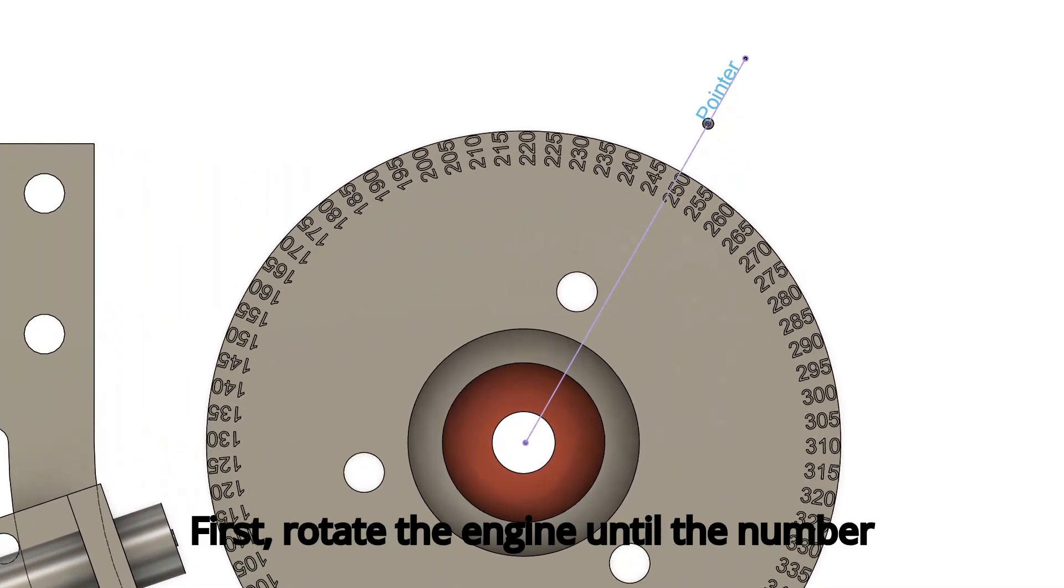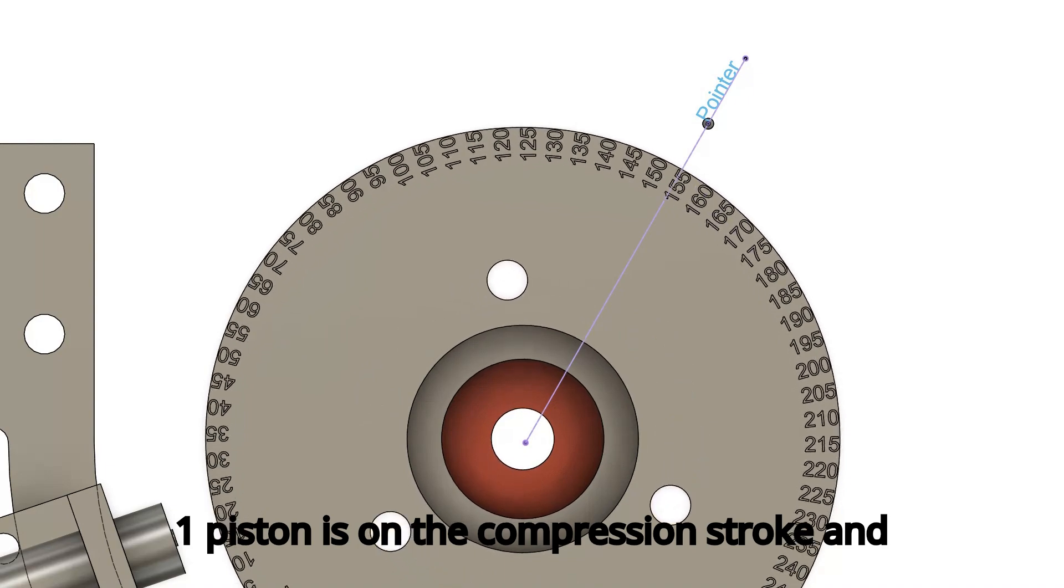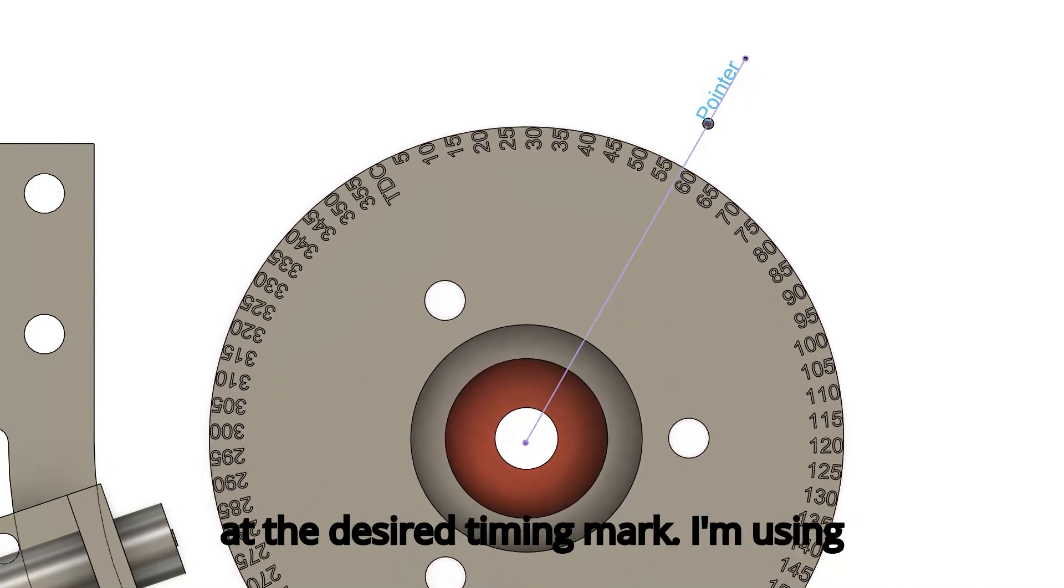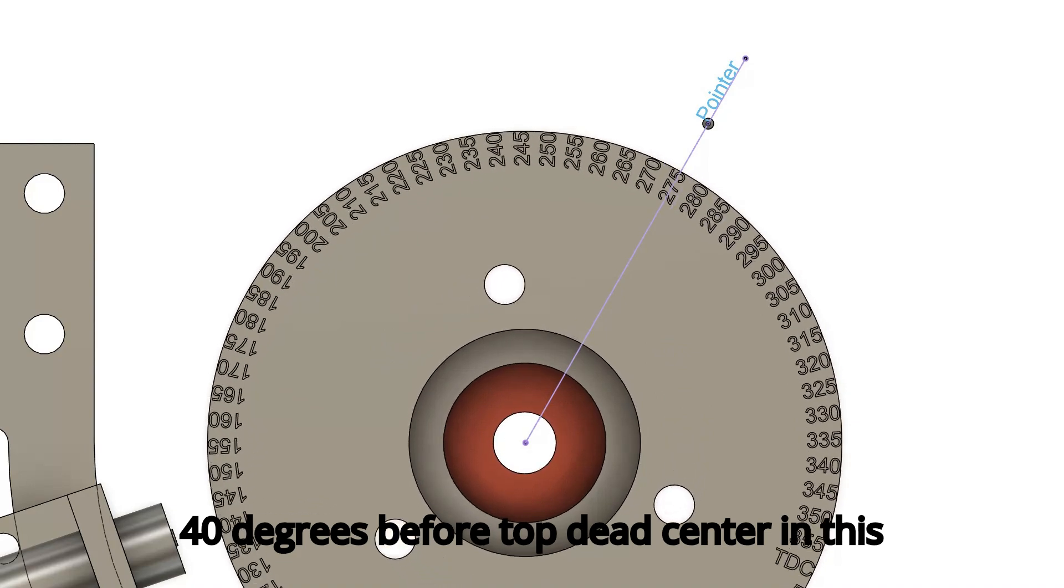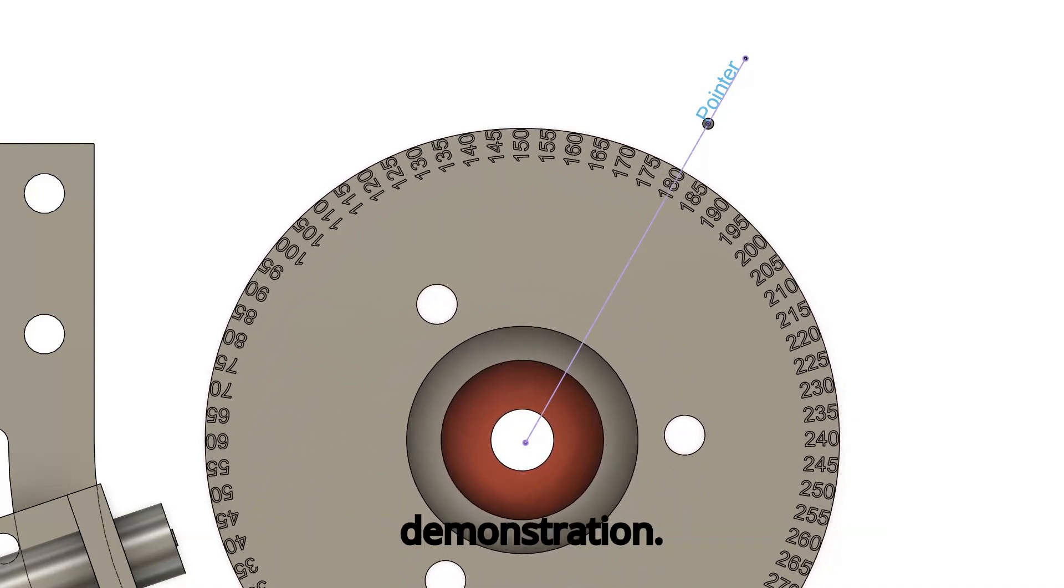First, rotate the engine until the number one piston is on the compression stroke and at the desired timing mark. I'm using 40 degrees before top dead center in this demonstration.